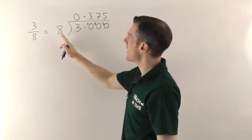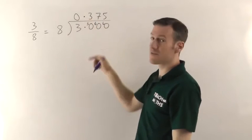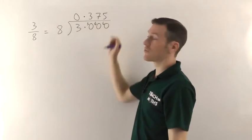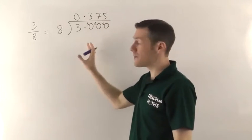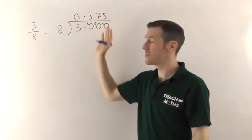And what it means is that 8s into 3 go 0.375 times. So 3/8 as a decimal number is 0.375.